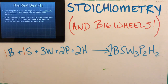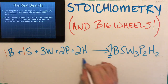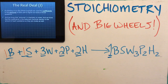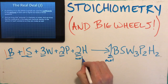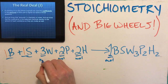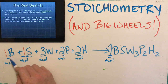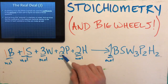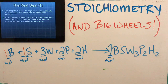Whenever we use the term 'amount' in chemistry, it means moles. Since these coefficients are the amount of each reactant or each product, the coefficients are the same as moles. So one mole of bodies will go with one mole of seats, three moles of wheels are required, and two moles of pedals and two moles of hand grips will make one mole of big wheels — that's 6.02×10²³ big wheels.